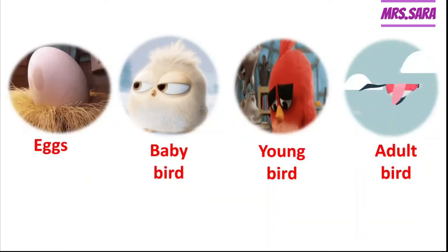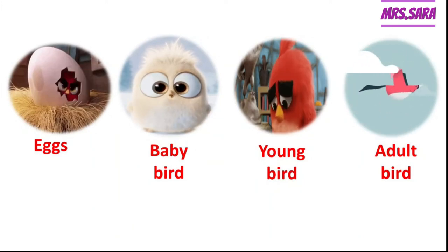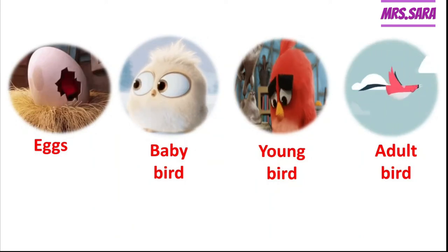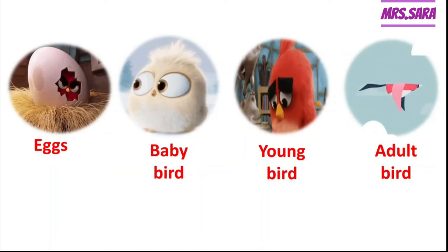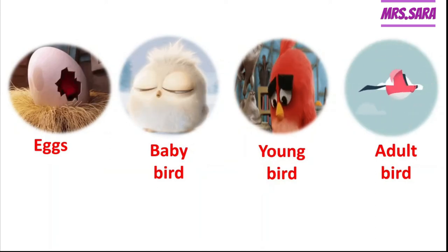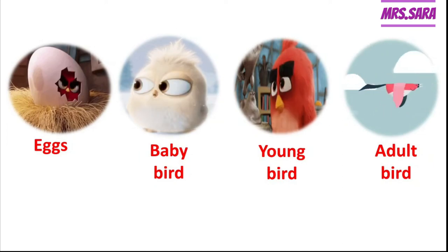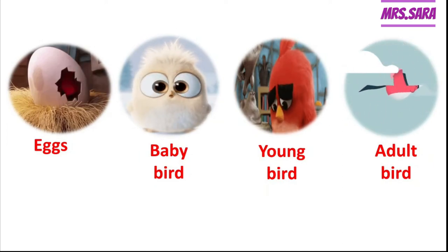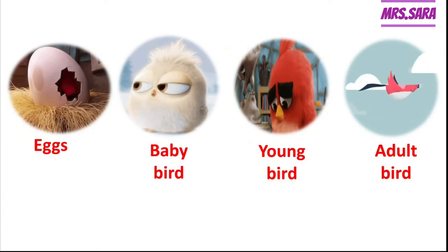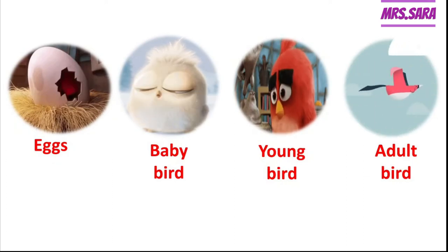The life cycle of the bird starts with the egg. After the egg, the baby bird comes out when the egg hatches. Then the baby bird grows to become a young bird, and the young bird grows to become an adult bird. So the bird life cycle is: egg, baby bird, young bird, adult bird.